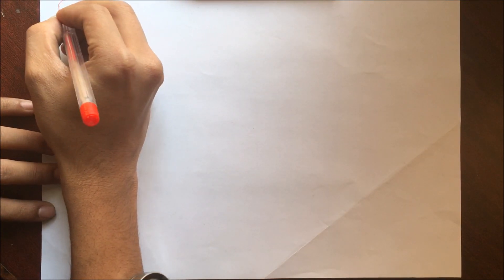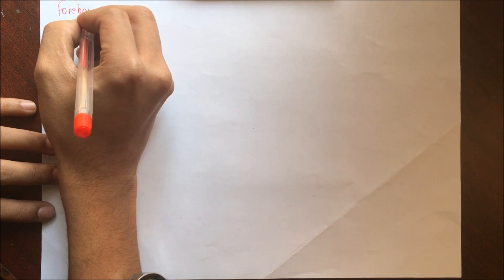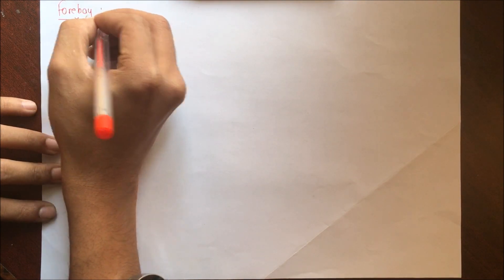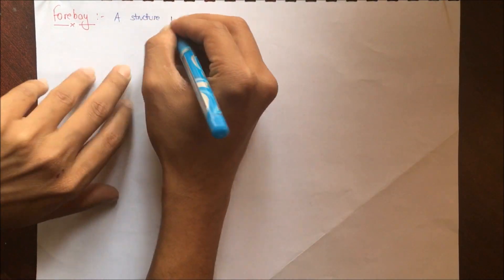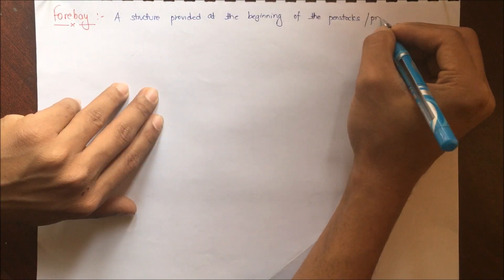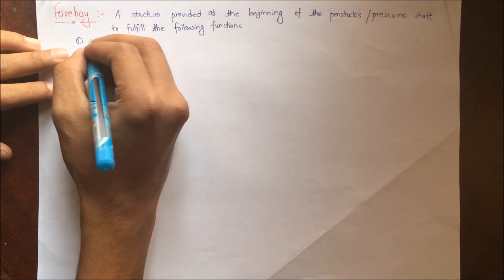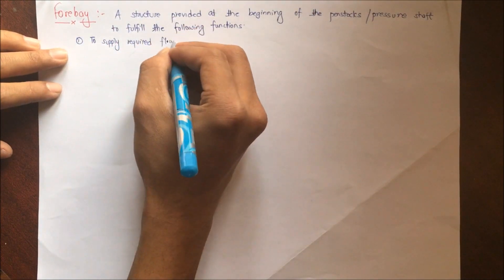In this video we'll be discussing the design of forbay and some terms related to forbay. What is a forbay? A forbay is a structure provided at the beginning of the penstock or pressure shaft to fulfill the following functions.